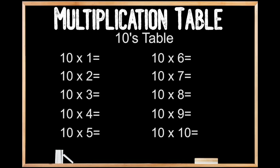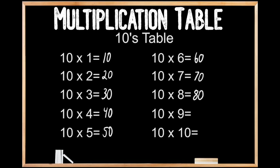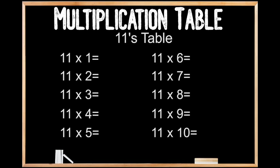Tens table. 10 times 8 is 80. 10 times 9 is 90. And 10 times 10 is 100.